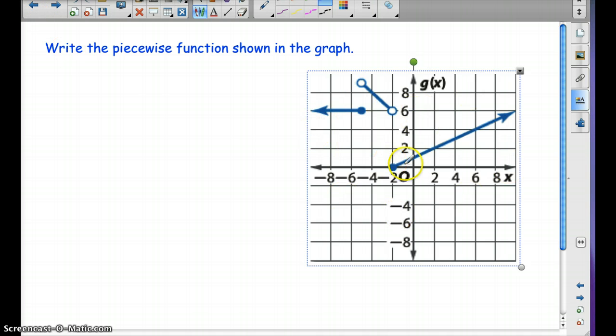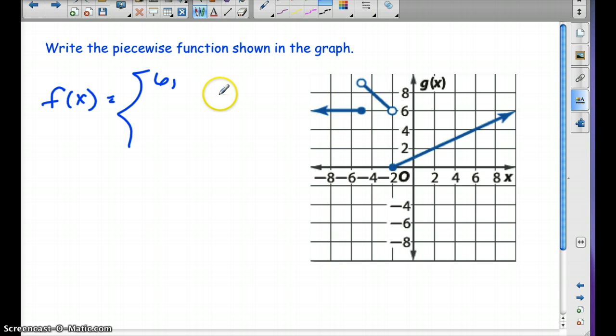So now, given the graph, can we write our piecewise function? Well, we know we're going to start with f of x and we're going to have a bracket here. So for this line right here, notice that we just have a straight line, a constant line of 6. So when f of x equals 6, it's going to be for if x is less than or equal to negative 4. And then we have this piece right here. This is in between if x is in between negative 4 and in between negative 2.